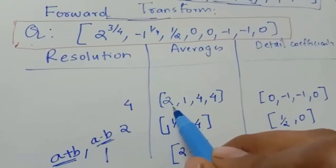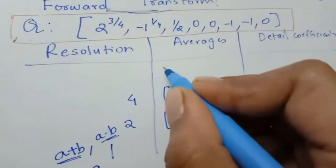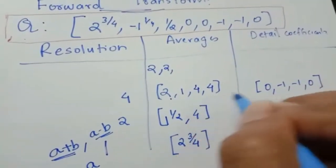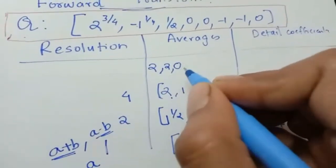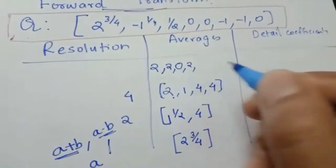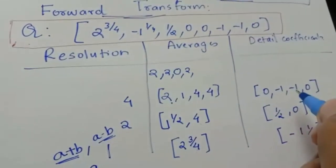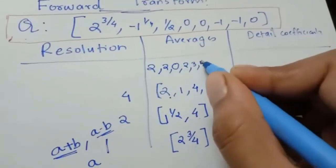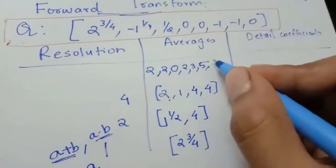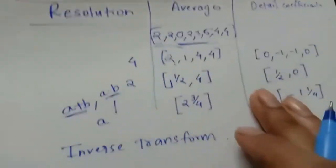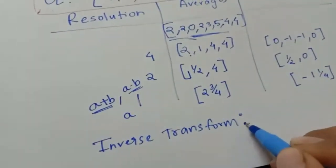Continuing the computation, we recover all the original values. That is how we got the original vector back. This process is the inverse Haar wavelet transform.